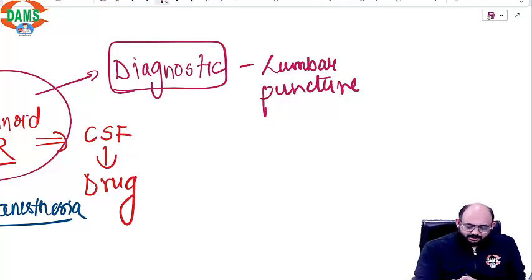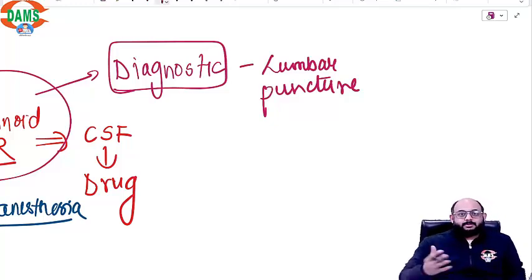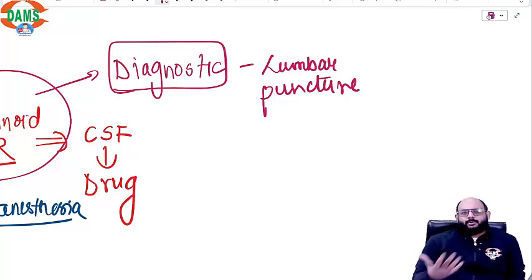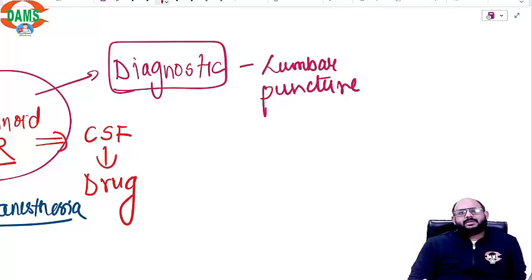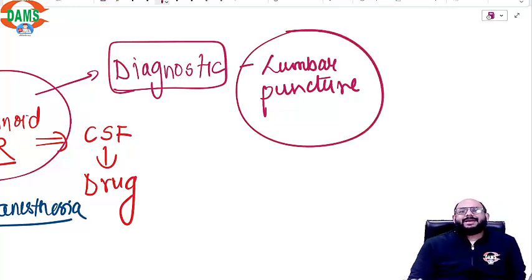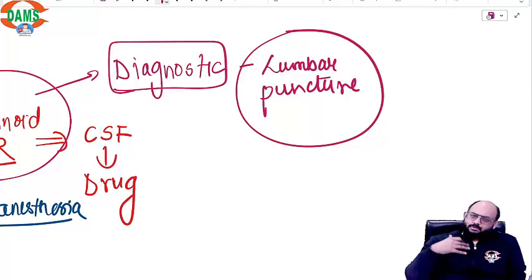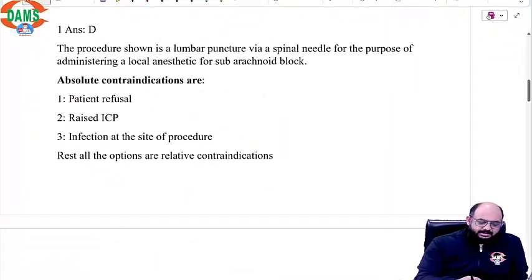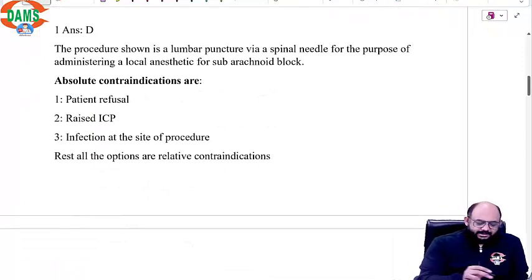The procedure remains the same, but what changes is your approach. As an anaesthetist, we do this to get the desired anaesthesia for surgery, but when you just want to take out CSF for diagnostic purposes it becomes a lumbar puncture. Whether it is CSF coming out or you pushing something in, for both these things there are certain absolute and relative contraindications.